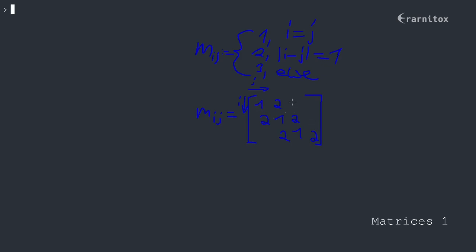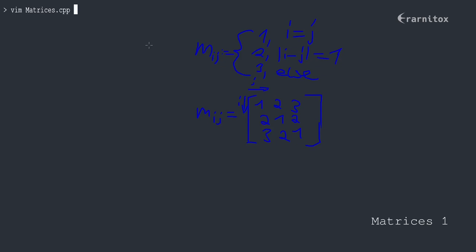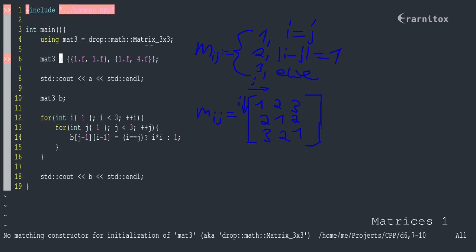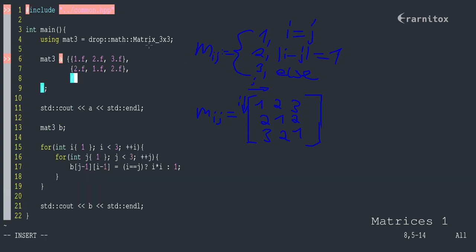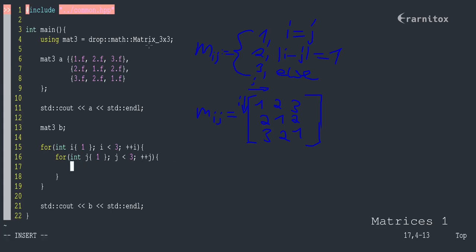The last thing missing is the else case, and that gives us our resulting matrix. Let's look at the code. To compare, we can define the matrices like before. Our first vector would be 1, 2, 3. Our second vector would be 2, 1, 2. Our third vector would be 3, 2, 1. Now let's see how we calculate it, because using the ternary operator would get convoluted, so let's use a switch instead.